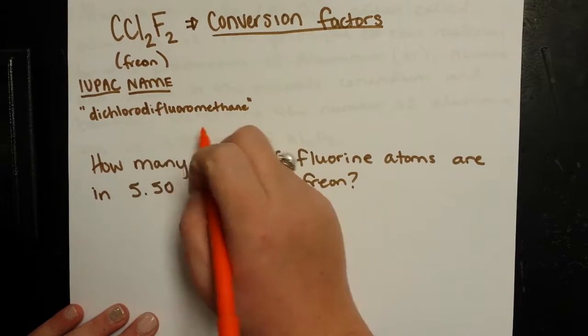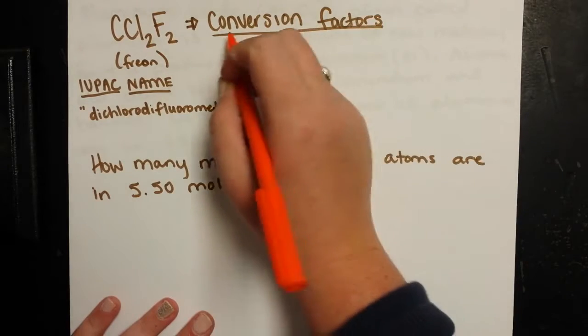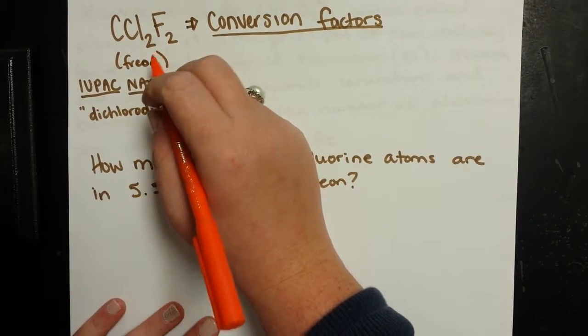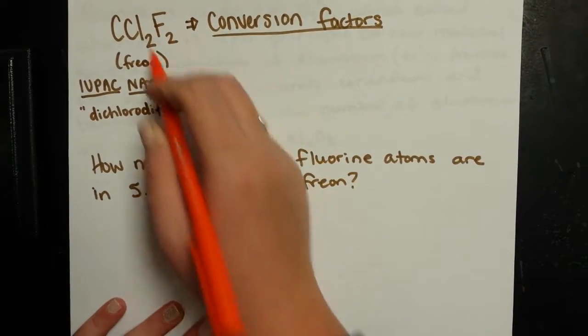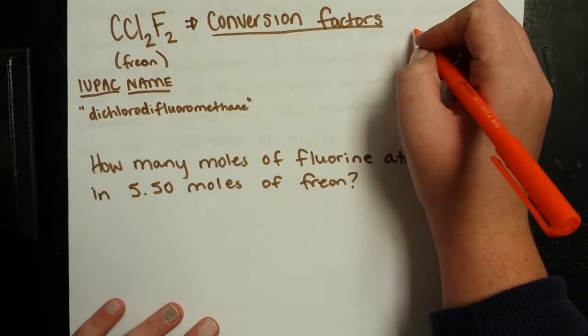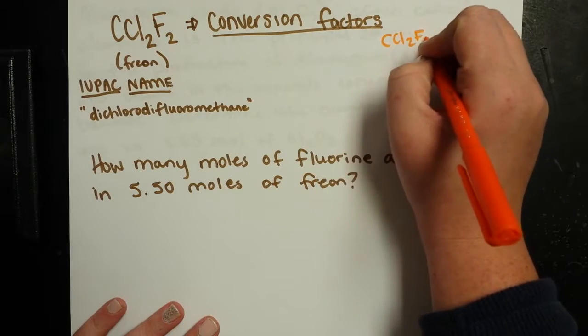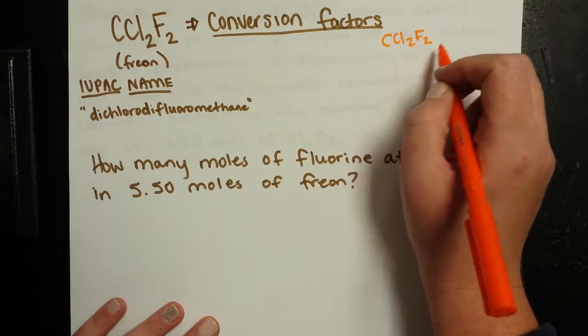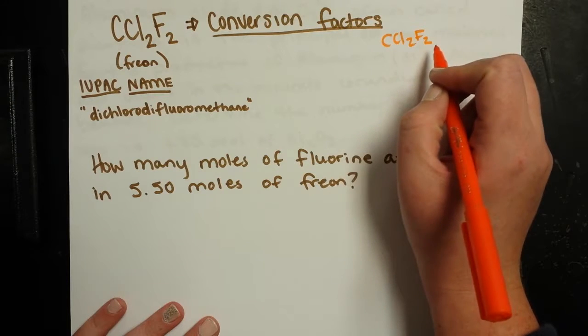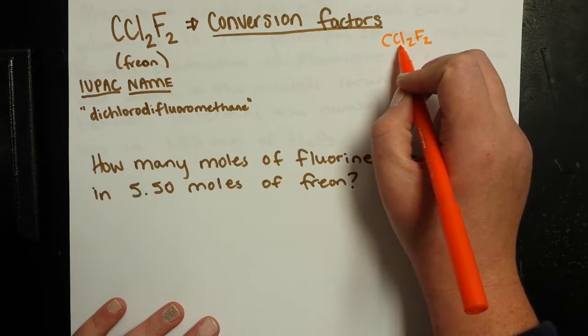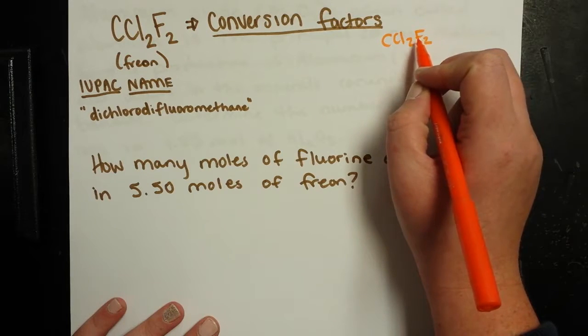I just thought my kids might like that. We can make certain conversion factors dealing with moles of Freon. So think about it as just one particle. So I've got CCl2F2. For every one molecule of Freon, I've got one carbon atom, I've got two chlorine atoms, and I've got two fluorine atoms.